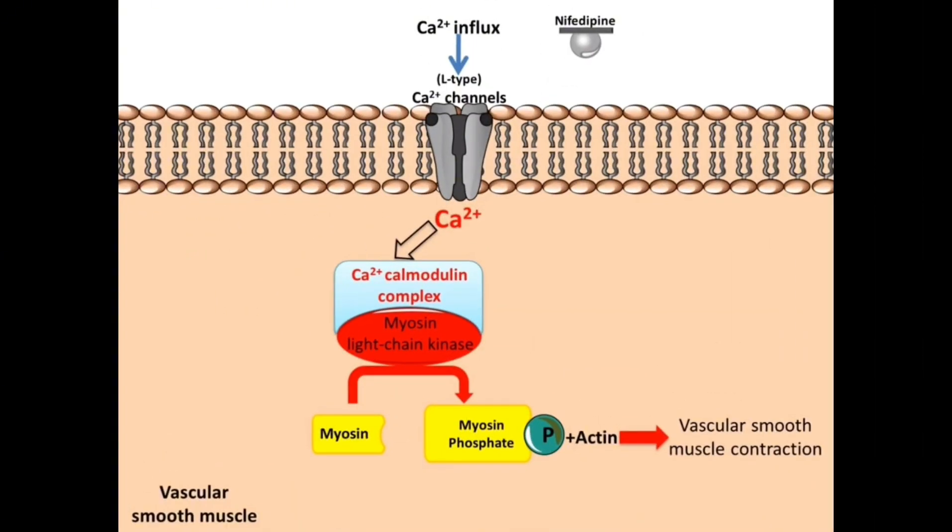Calcium channel blockers function by binding to the alpha-1 subunit, which leads to a decrease in calcium influx which inactivates the myosin light chain kinase enzyme. This leads to relaxation of smooth muscle, ultimately lowering blood pressure.